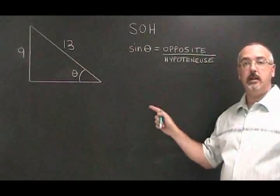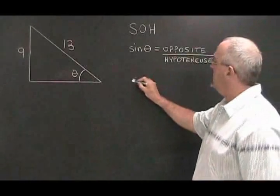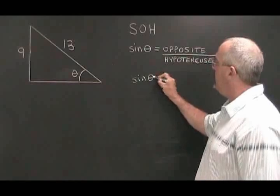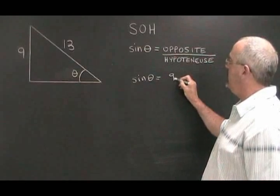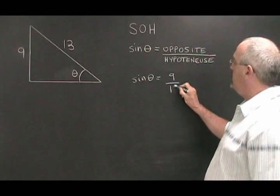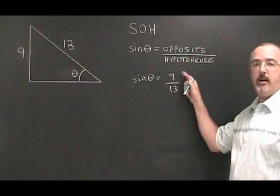We fill in our solve formula like this: sine of theta equals opposite, which is 9, over hypotenuse, which is 13. We have to simplify this part now.